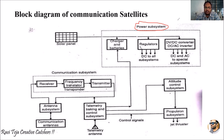Whenever satellites move around the earth, they use their solar panels to take energy from the sun, convert it into electrical energy, and store it in batteries. Several regulators convert the energy into the required level, which is then fed to DC as well as AC inverters to supply the required amount of energy for the whole satellite operation.